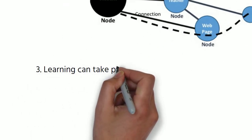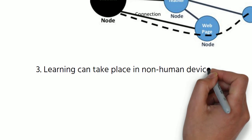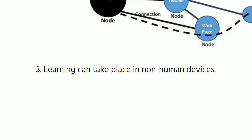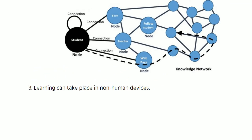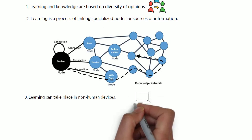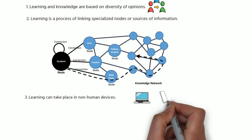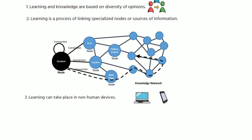Third, learning can take place in non-human devices. In the digital age, we have many tools available to help us learn. For example, we can access a wealth of information and connect with a variety of people through computers and smartphones. These tools can help us build our learning network.